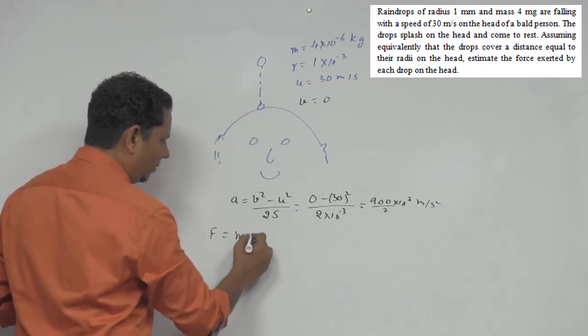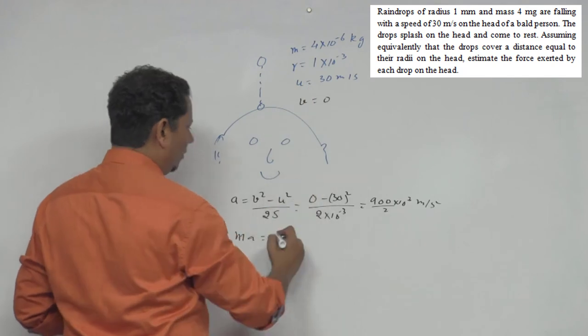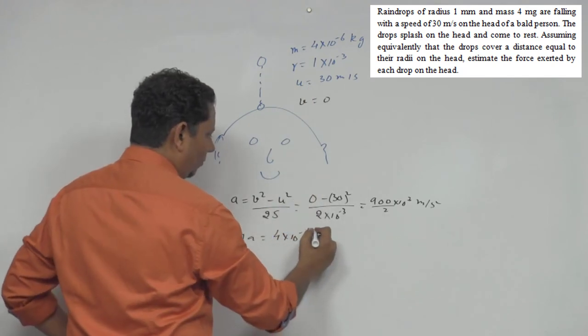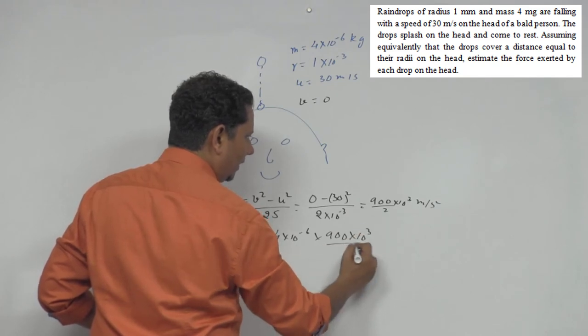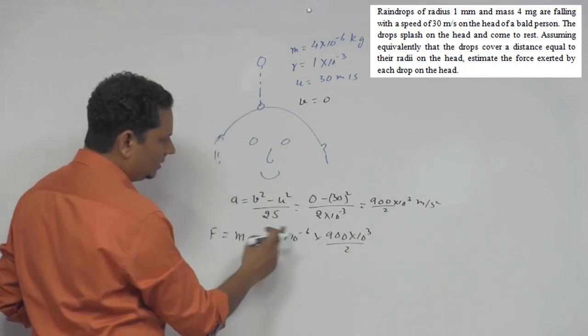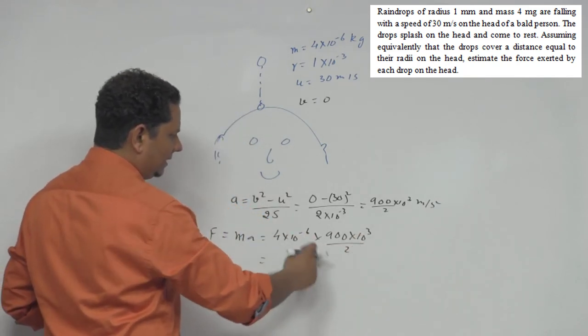Now force will be equal to ma, which is the mass 4 into 10 to the power minus 6, multiplied by 900 into 10 to the power 3 divided by 2. Now just solve this.